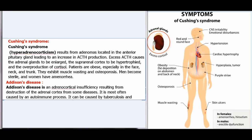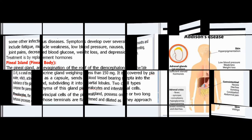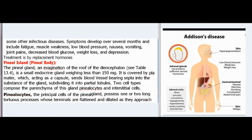Cushing's syndrome (hyperadrenocorticism) results from adenomas in the anterior pituitary leading to increased ACTH production. Excess ACTH causes adrenal gland enlargement, suprarenal cortex hypertrophy, and overproduction of cortisol. Patients are obese especially in the face, neck, and trunk, exhibit muscle wasting and osteoporosis; men become sterile and women develop amenorrhea. Addison's disease is adrenocortical insufficiency resulting from destruction of the adrenal cortex, most often caused by an autoimmune process or occasionally tuberculosis. Symptoms include fatigue, muscle weakness, low blood pressure, nausea, vomiting, joint pains, decreased blood glucose, weight loss, and depression. Treatment is by replacement hormones.